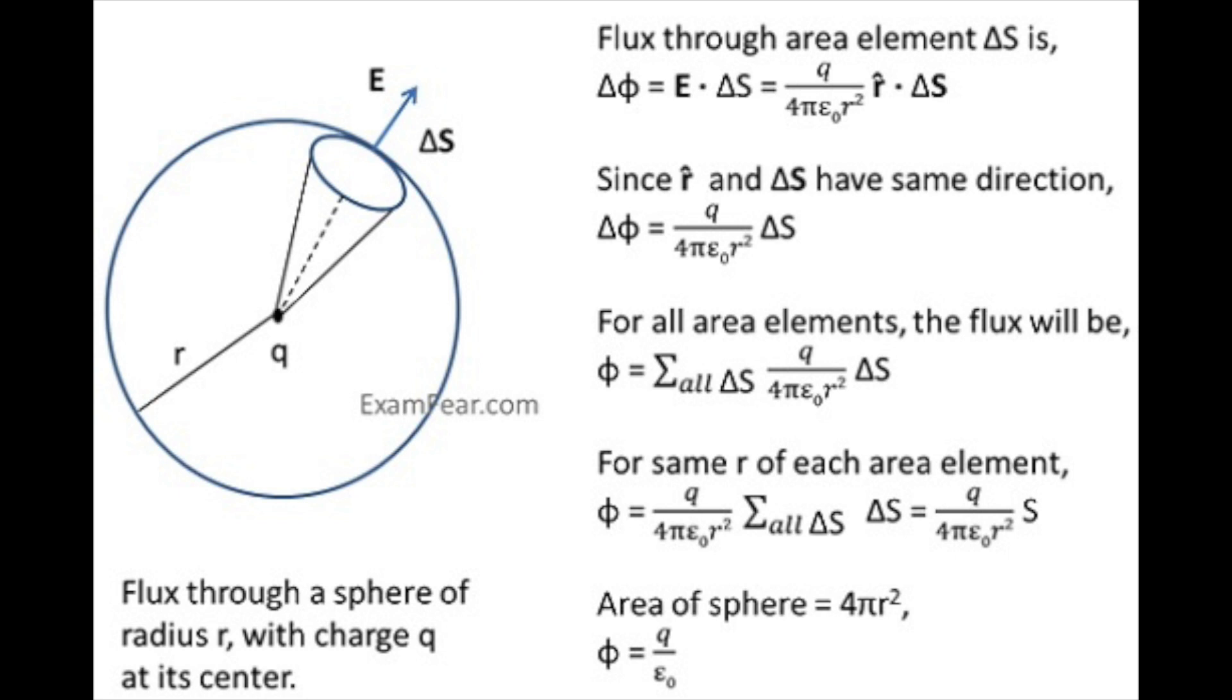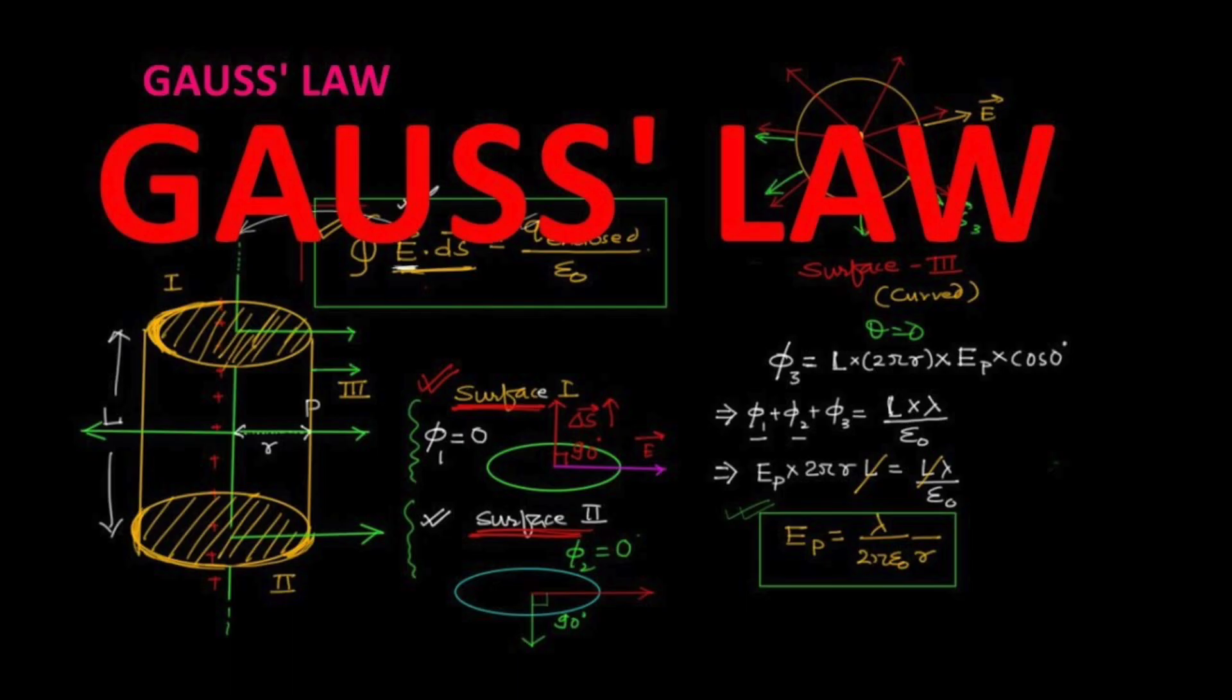The area integral of the field over any closed surface equals the net charge enclosed in the surface divided by the permittivity of space. Gauss's law is one of Maxwell's equations, the four fundamental equations of electricity and magnetism.